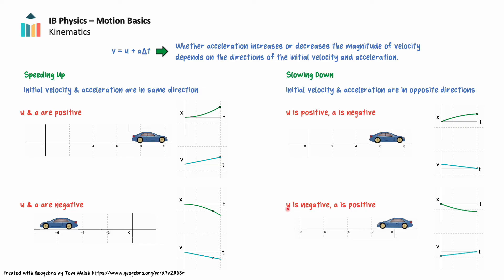Lastly, if an object has a negative velocity but accelerates in a positive direction, the object again slows down. On a position-time graph, the gradient gets less steep over time. On the corresponding velocity-time graph, the motion is represented by a straight line with a positive gradient below the time axis. The velocity once again approaches zero as the object slows. If the object's initial velocity and acceleration are in opposite directions, the object will slow down.